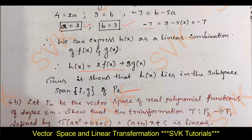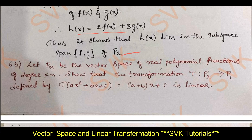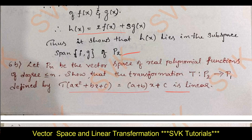Moving on to question 6b: let Pn be the vector space of real polynomial functions of degree less than or equal to n. Show that the transformation T: P2 → P1 defined by T(ax² + bx + c) = (a+b)x + c is linear. To prove linearity, we need to show two things: T(u+v) = T(u) + T(v) (addition property), and T(αu) = αT(u) (scalar multiplication property). If both are satisfied, we can say the transformation is linear.